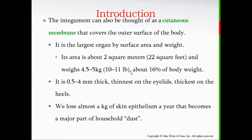The integument can also be thought of as a cutaneous membrane that covers the outer surface of the body. Except for the openings in your face and your eyeballs, you're pretty much covered by your integument. It is the largest organ by surface area and weight — about two square meters, or roughly 22 square feet for those more familiar with the English system.